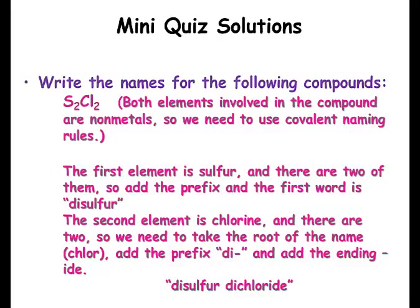Both elements are nonmetals — covalent naming rules apply. The first element is sulfur, and there are two of them, so we add the prefix 'di': disulfur. The second element is chlorine with two of them — we hack off the '-ine' ending, add '-ide' to get chloride, and add 'di': dichloride. So the compound is disulfur dichloride — two sulfurs, two chlorines.